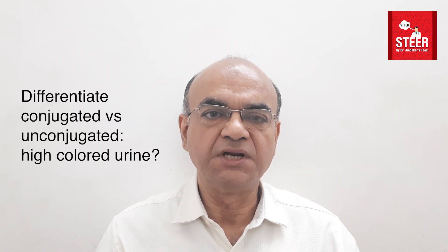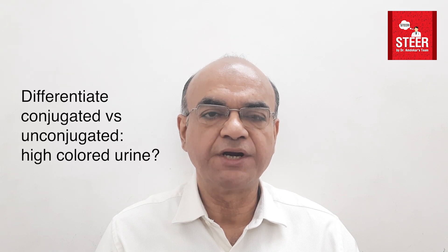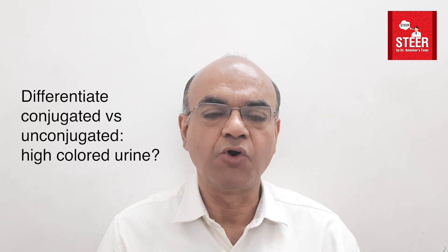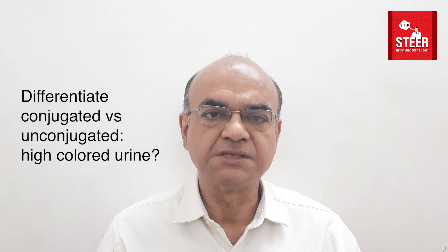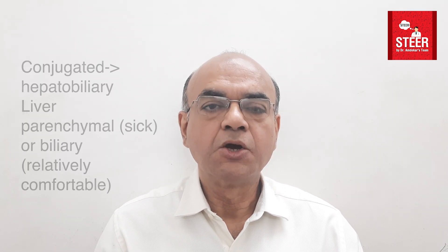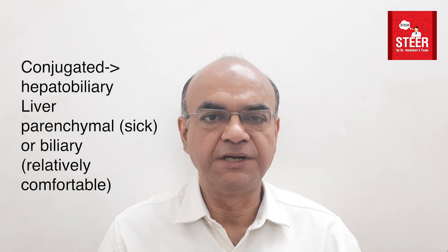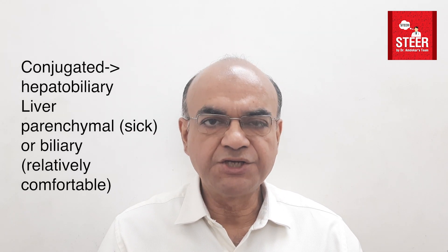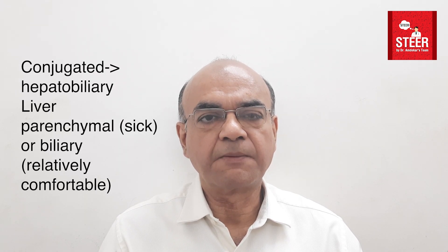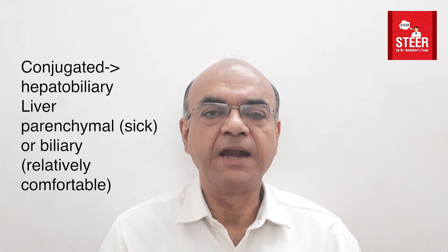The first step is to clinically distinguish between conjugated and unconjugated hyperbilirubinemia, which is done by asking for the presence or absence of high-colored dark yellow urine. Conjugated hyperbilirubinemia is due to hepatobiliary disorders. For clinicians, the liver can be divided into four parts: liver parenchyma, biliary tract, venous system, and the RE system.